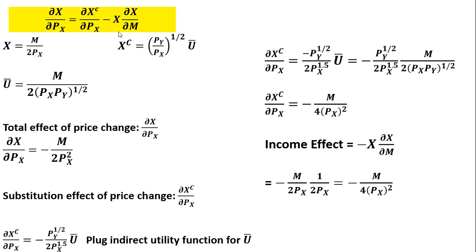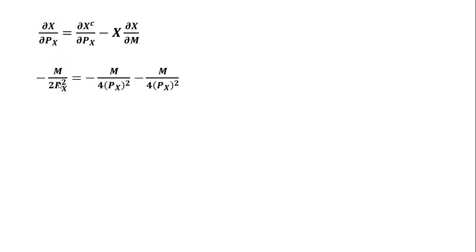Finally, the income effect is negative x — the ordinary demand — multiplied by the partial derivative of the ordinary demand function with respect to income. For x, we plug in the ordinary demand, which is income divided by 2 times the price of good x. The partial derivative of the ordinary demand with respect to income gives 1 divided by 2 times the price of good x. Simplifying, we get the income effect result. We then write the Slutsky equation with all three components: the total effect, the substitution effect, and the income effect.